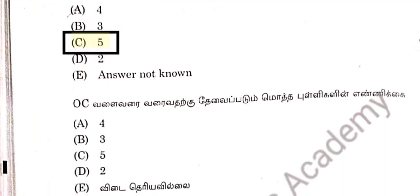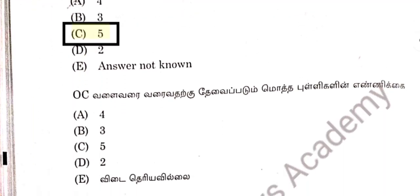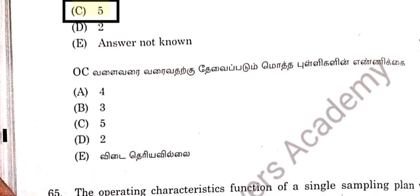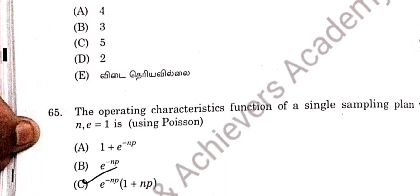Question 64: The total number of points required to draw an OC curve — option C. Five points are needed to draw an OC curve.